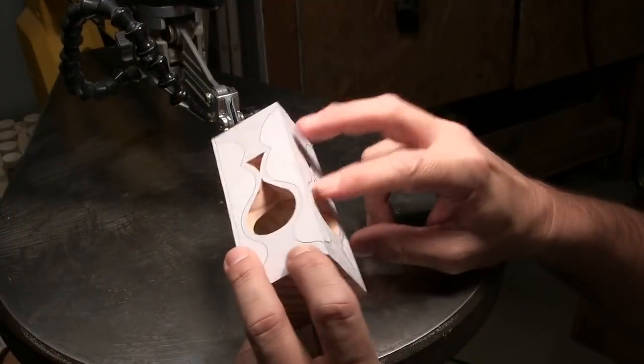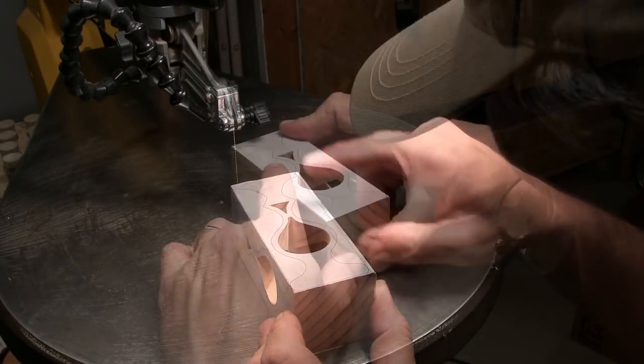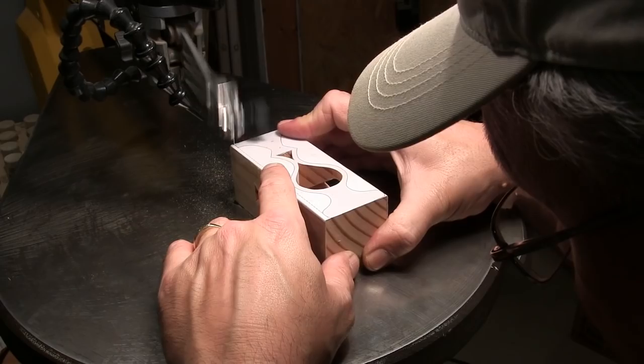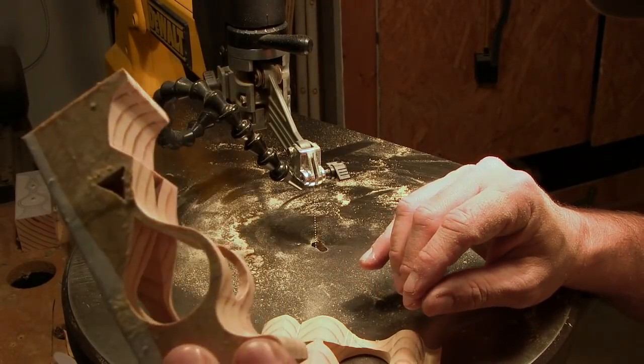I've completed the four inside cuts here and now it's a matter of cutting out the perimeter. And there you can see it taking shape.